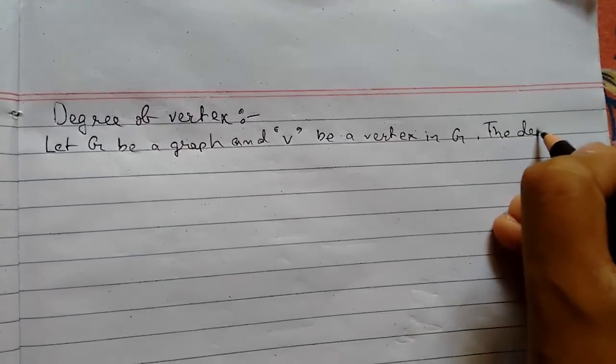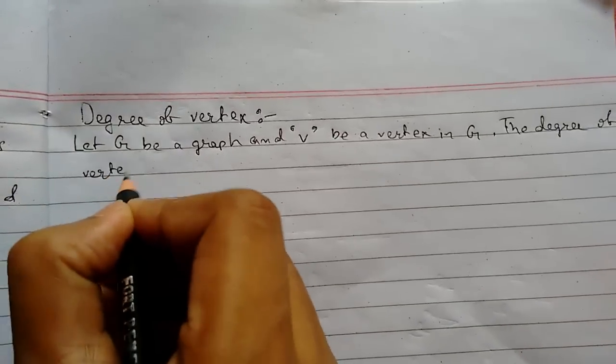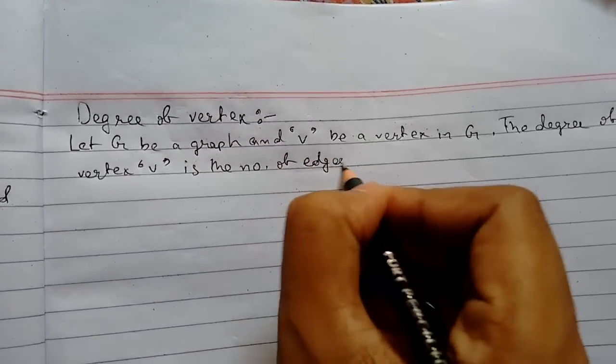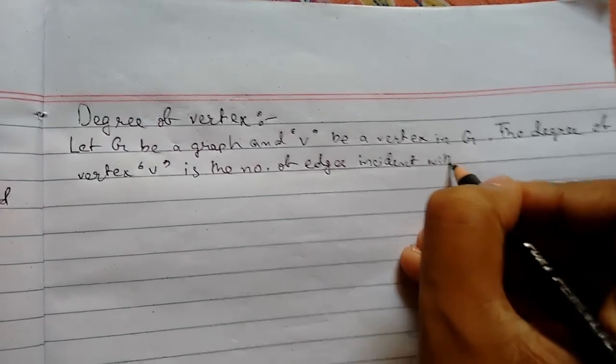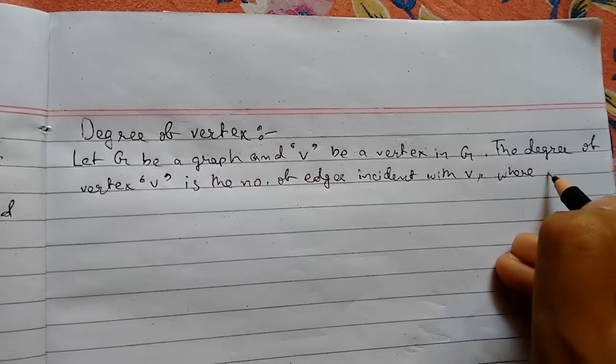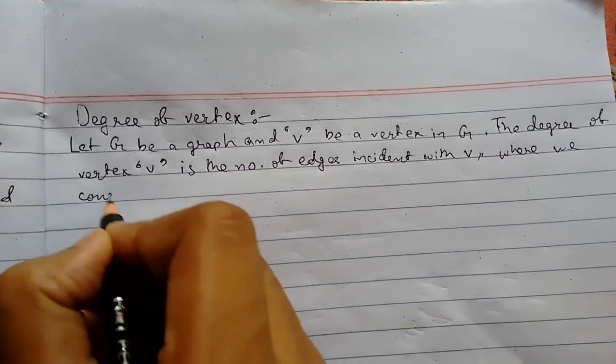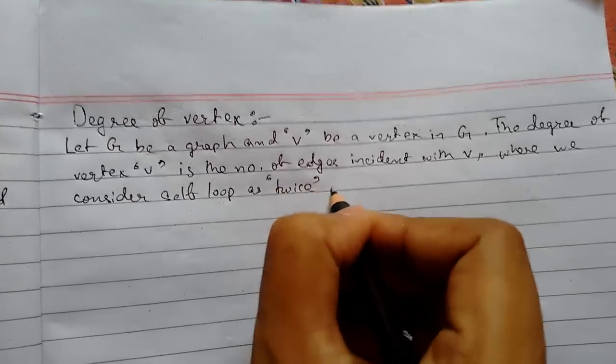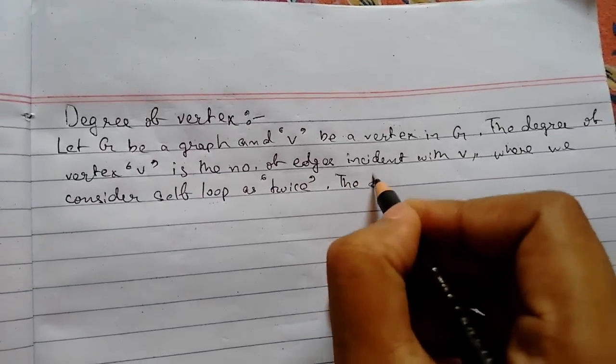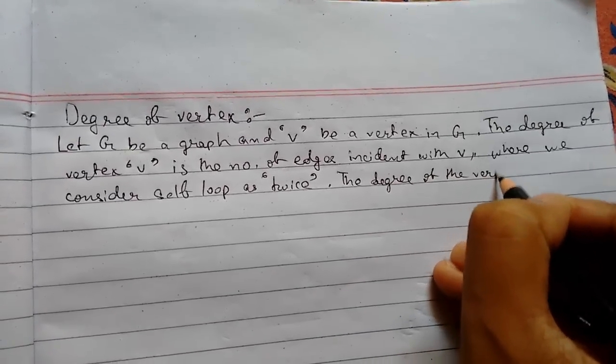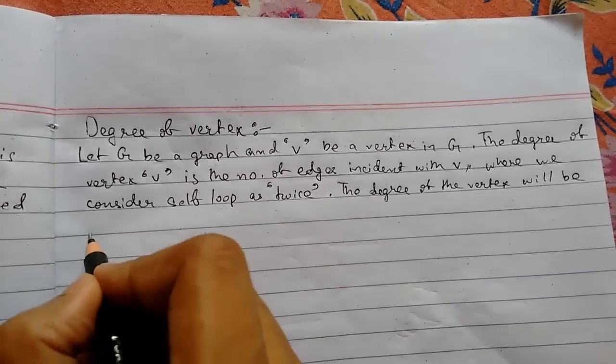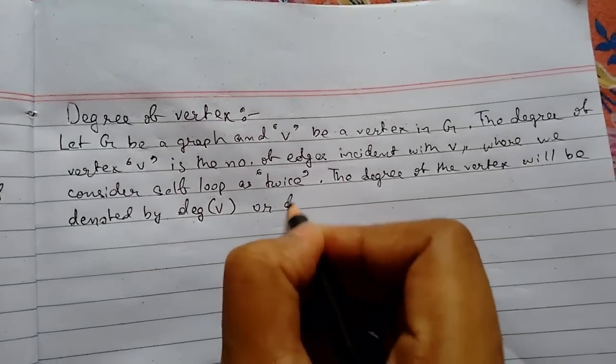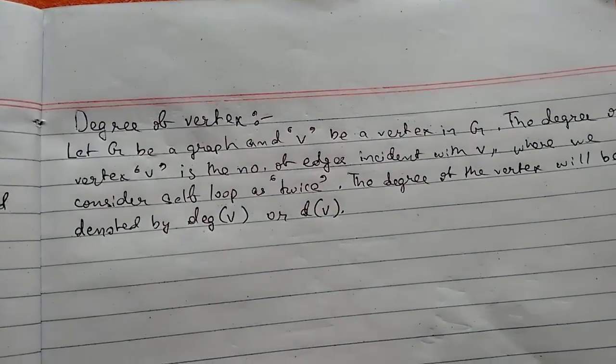The degree of vertex V is the number of edges incident with V, where we consider self loop as twice. So the degree of the vertex will be denoted by d(V) or deg(V). So this was the definition.